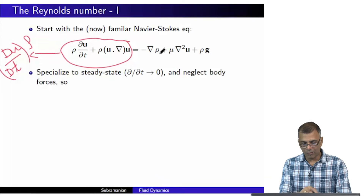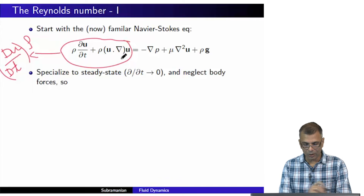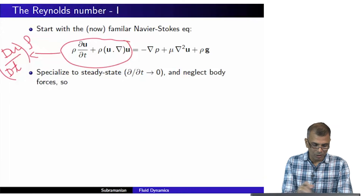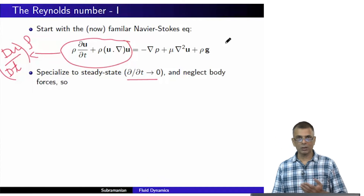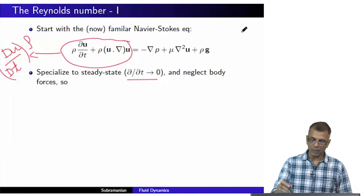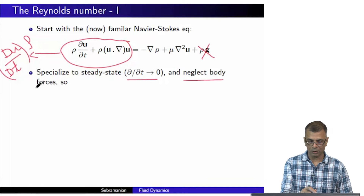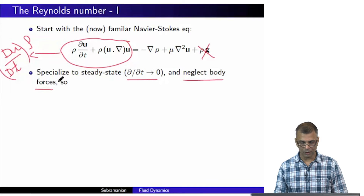Having written it this way, we can specialize to steady-state situations, which is to say the partial d/dt is equal to zero. In other words, for an observer who is in a lab frame, he or she does not see any explicit time dependence. We will also neglect body forces, just for simplicity.